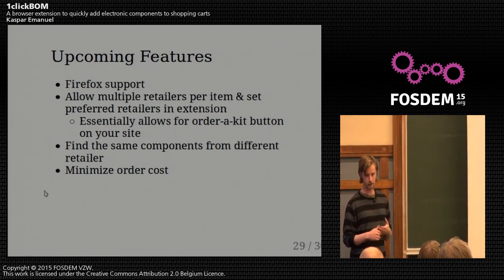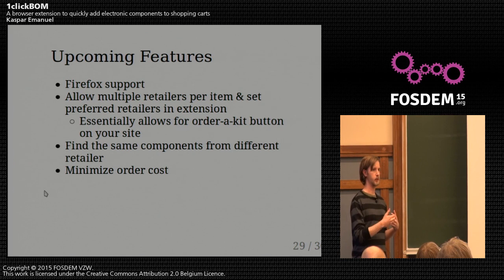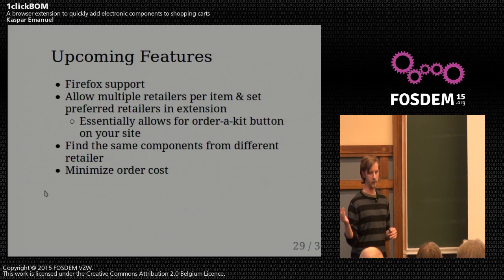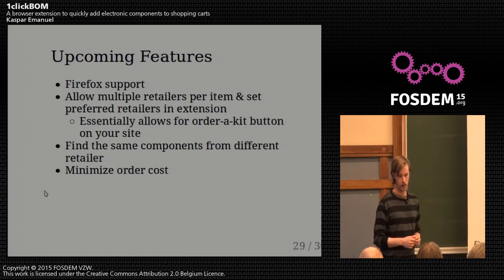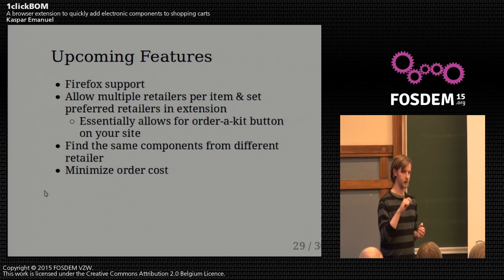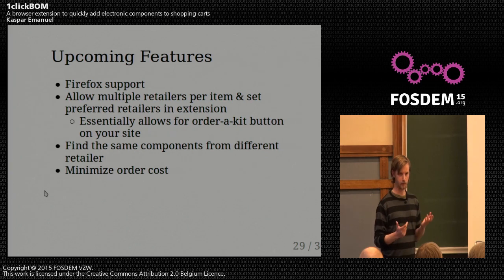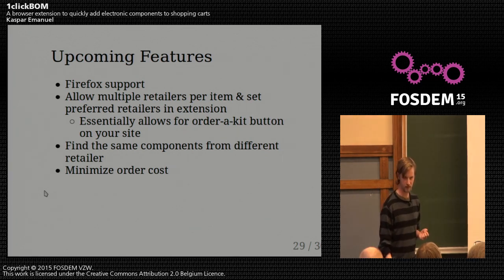Further on, I want to find the same components from different retailers so you can input what you're purchasing and hopefully the tool can figure out what that means for other retailers, letting you generate larger BOMs that others can use for their preferred retailers. My 1.0 goal is to have a function to minimize the cost of your bill of materials — figuring out what the lowest cost plus shipping would be — and save everyone money.